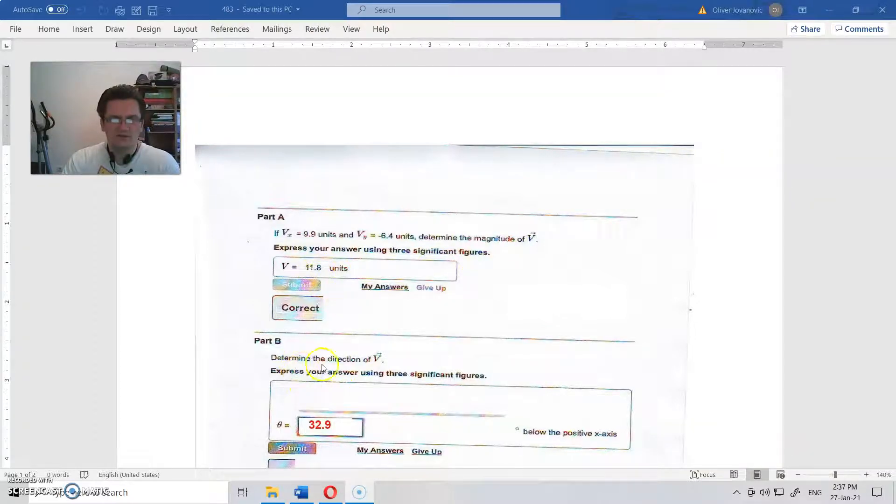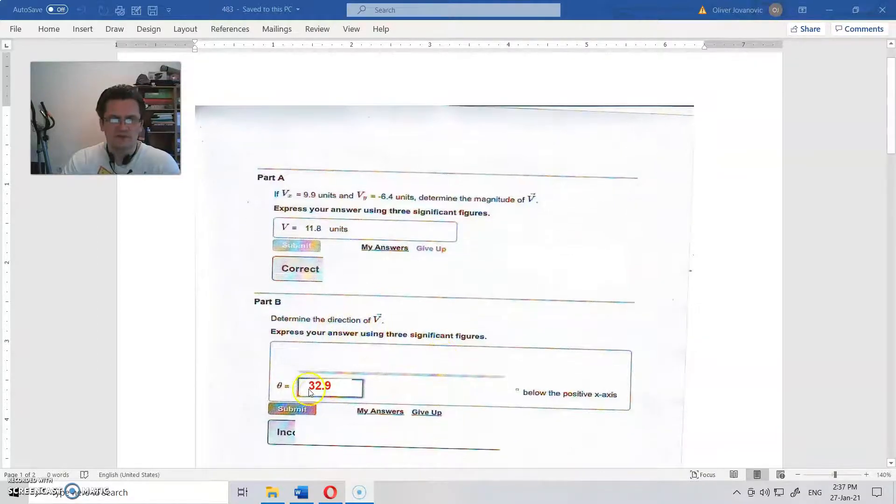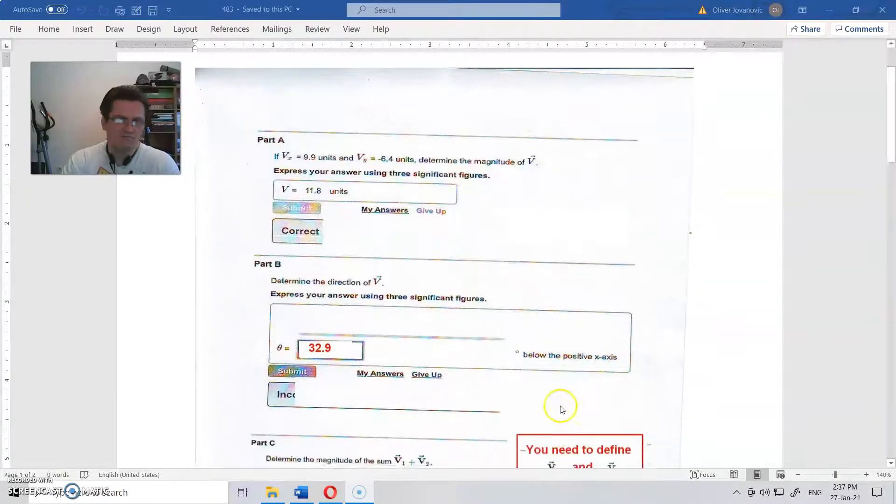Second was determine the direction of V. Express your answer using three significant figures. So one through three below positive x-axis.